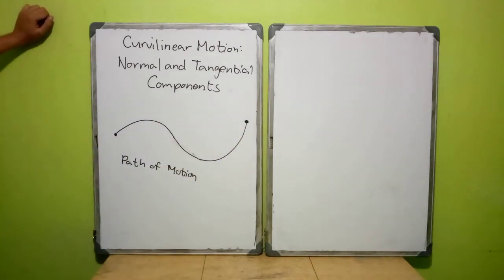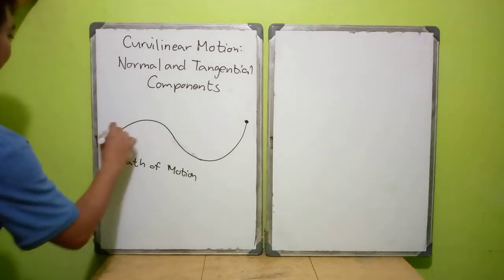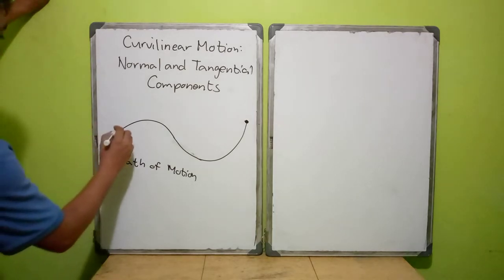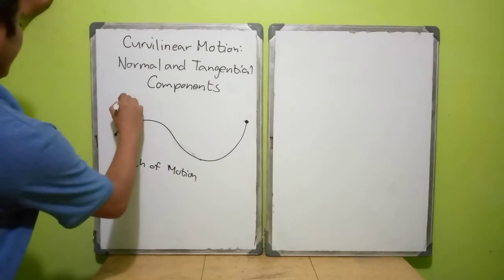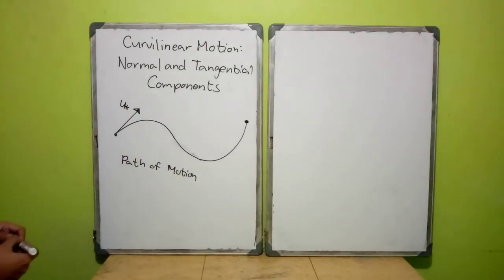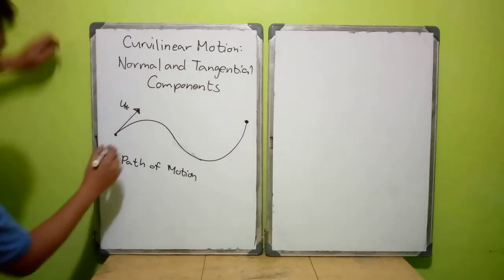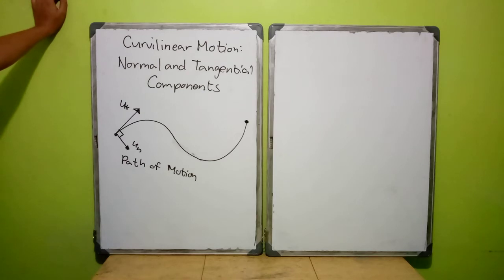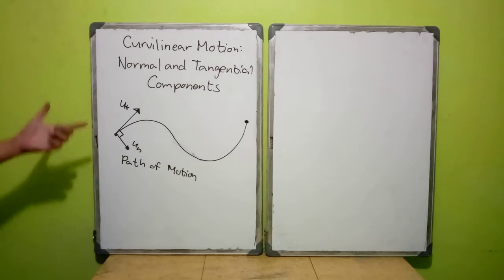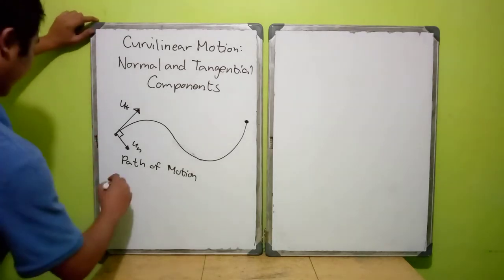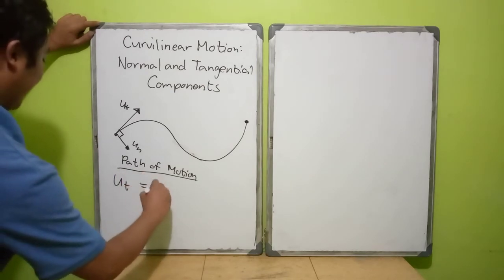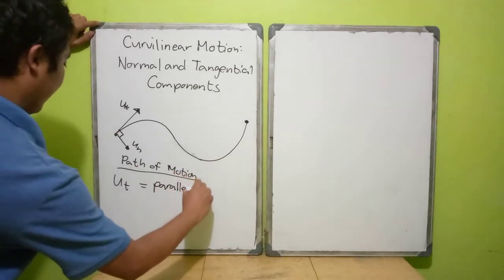How do we draw your tangential and normal components? In this curve, the tangential component goes like this — this is your tangential component. How do we determine if a direction is tangential? With regards to the path of your motion, your ut is parallel to the direction of motion.